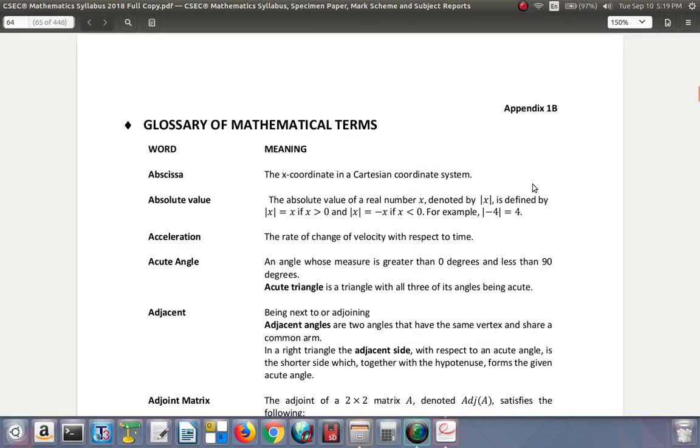Let's look at this glossary of terms. Abscissa: the x-coordinate in a Cartesian coordinate system. Absolute value: the absolute value of a real number x, denoted by two bars around it, is defined as x if x is greater than or equal to zero, and negative x if x is less than zero. The absolute value will always be positive.